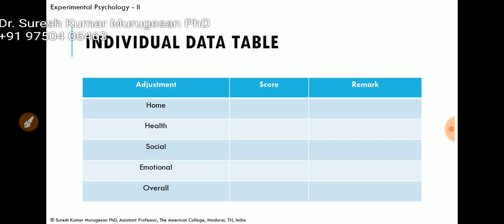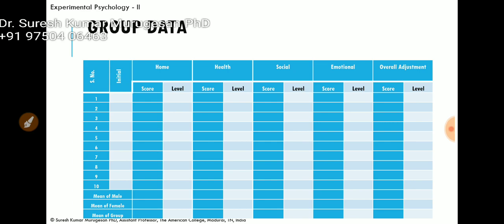Once we know the scoring and norms, we have to develop an individual data table with columns for adjustment dimensions, overall score, raw score obtained by the client, and remarks based on the level of score. Likewise, for group data, we take an equal number of males and females, and at the end we find out the mean of the male group, female group, and overall mean.